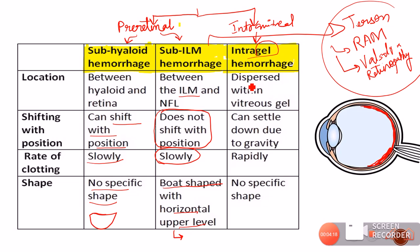The intragel or intravitreal hemorrhage is dispersed within the vitreous gel. It will settle down due to gravity and clot very rapidly. If you follow up a patient with intragel hemorrhage, you will notice that organization of the vitreous hemorrhage occurs very rapidly compared to subhyloid or sub-ILM hemorrhage. The color of a fresh intravitreal hemorrhage is red, then changes from red to yellow as the RBCs degenerate.